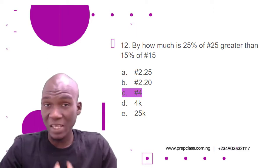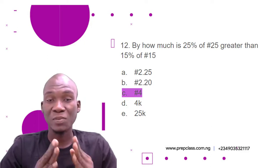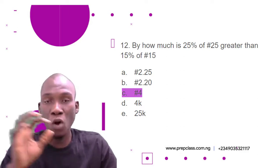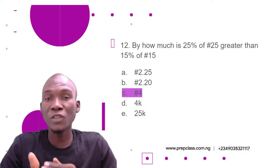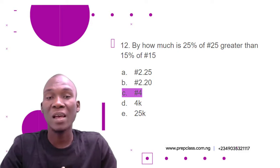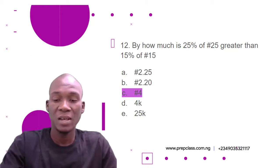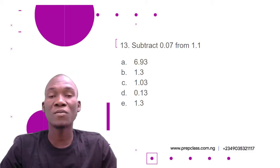I hope that was easy to understand. The question asks by how much is 25 percent of 25 naira greater than 15 percent of 15 naira. The word 'greater than' means you simply find the difference. To find the difference you must know what 25 percent of 25 naira is and what 15 percent of 15 naira is, then calculate the difference. Question 13: Subtract 0.07 from 1.1.